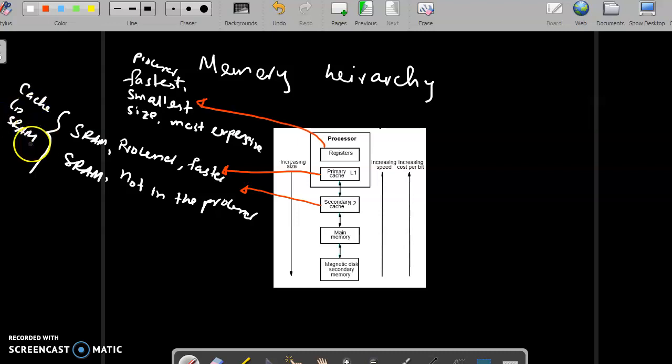SRAM is faster than DRAM, right? In terms of what? Access. How do we store main memory? Usually, a part of the main memory is made with DRAM. It has a larger size than secondary cache.